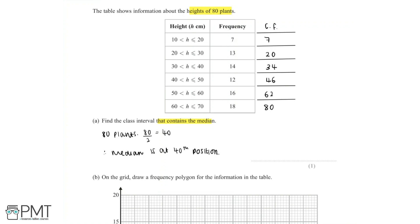So in the interval 10 to 20, we have a frequency of 7. In the interval 20 to 30, we have a cumulative frequency of 7 plus 13, which is equal to 20. Now 20 is still less than 40. We need to find the class interval which contains the 40th value.